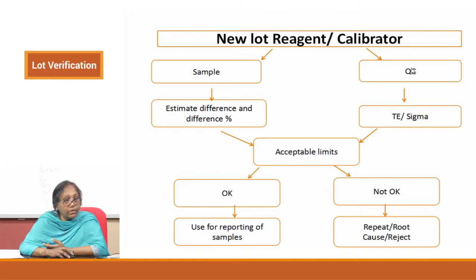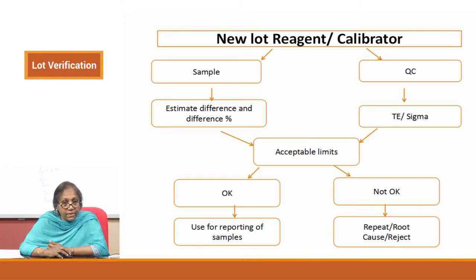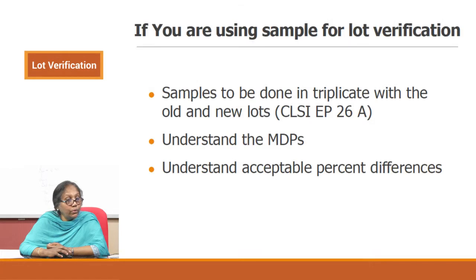In the case of using QC, you also have to specify your acceptability — what is your total error that you will accept and what is the sigma that you will accept for that reagent. If it is found acceptable, you put it into use; if not, you do the same — repeating or rejecting as the case may be. Let us examine how you will do both of these things.